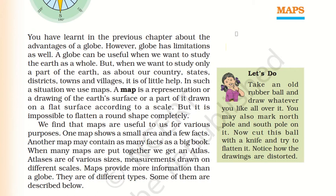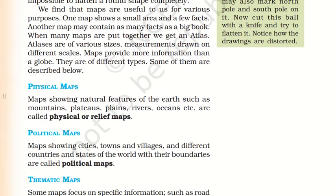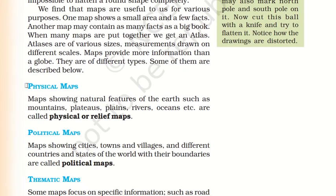The 4th Chapter is Maps. The first important point is Physical Maps. Physical Maps basically show natural features of the earth such as mountains, plateaus, plains, rivers, oceans, etc. These are called physical relief maps.